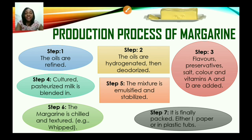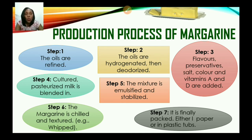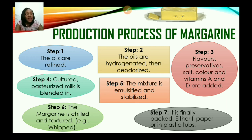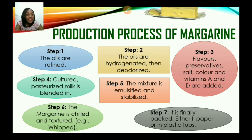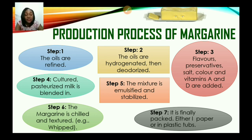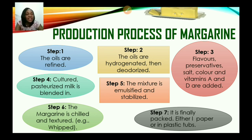Let us look at the production process of margarine in more detail. There are seven steps. Step one: the oils are refined. Step two: the oils are hydrogenated and then deodorized. Step three: flavors, preservatives, salt, color and vitamins A and D are added. Step four: cultured pasteurized milk is blended in. Step five: the mixture is emulsified and stabilized. Step six: the margarine is chilled and textured — for example, persons may get block margarine or whipped margarine. Step seven: it is finally packed either in paper or plastic tubs.